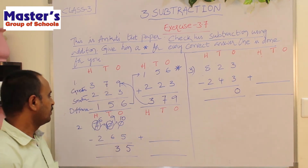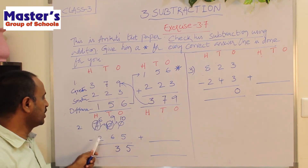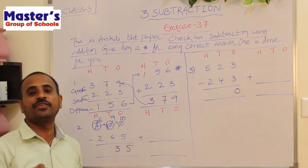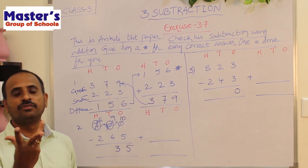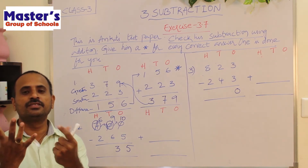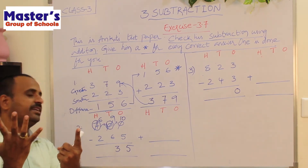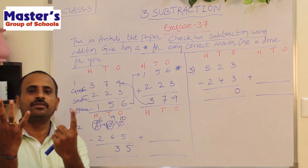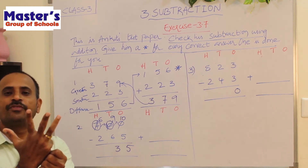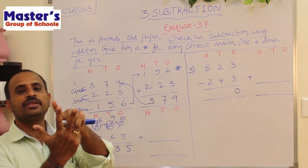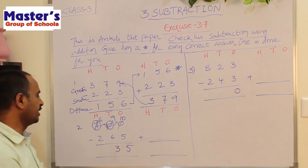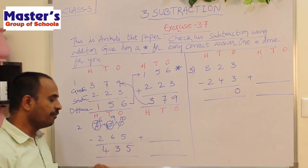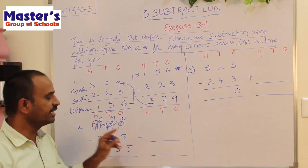Go to hundreds place: 6 and 2 are present. Open 6 fingers, close 2 fingers: 1, 2. There are remaining 4 fingers. Write 4 in hundreds place. The difference is 435.